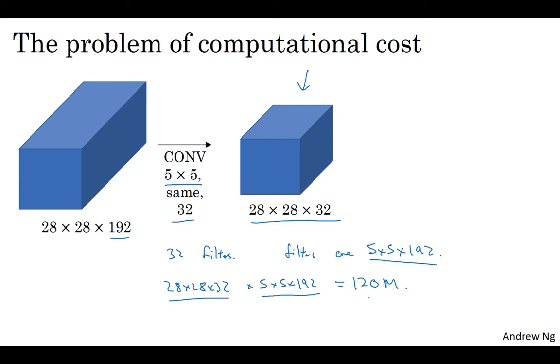The total number of multiplies you need is the number of multiplies you need to compute each of the output values times the number of output values you need to compute. If you multiply out all these numbers, this equals 120 million. While you can do 120 million multiplies on a modern computer, this is still a pretty expensive operation. Please remember the number 120 million so you can compare it with what you see on the next slide.